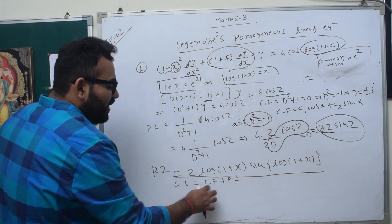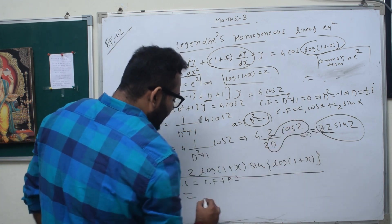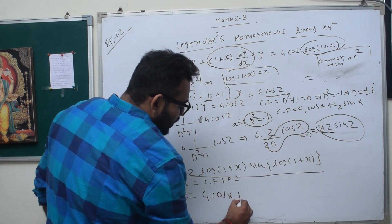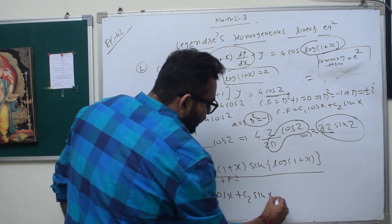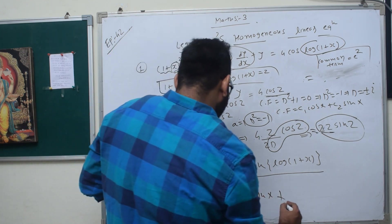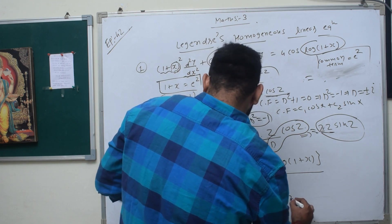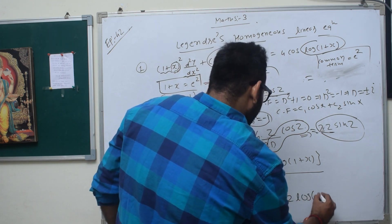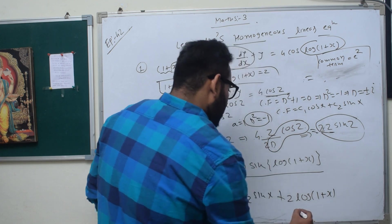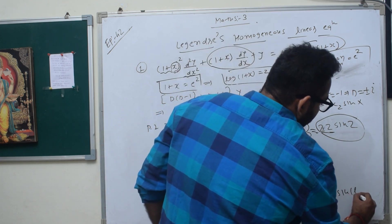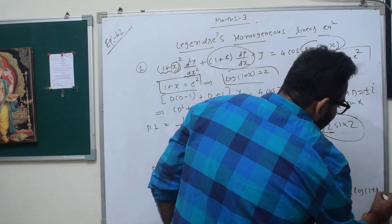So this was our PI, this was our CF. Now if we have these two, we have general solution. So CF plus PI. CF is c1 cos x plus c2 sin x plus PI. So this is what is our PI: 2 log 1 plus x into sin log 1 plus x. So this is the complete answer.